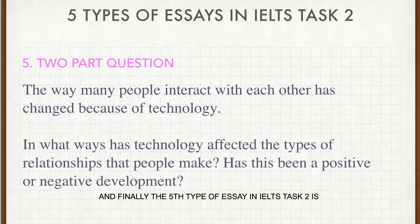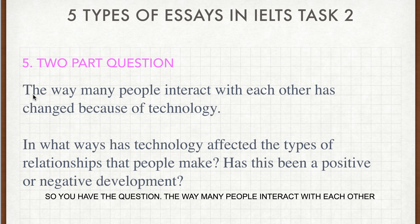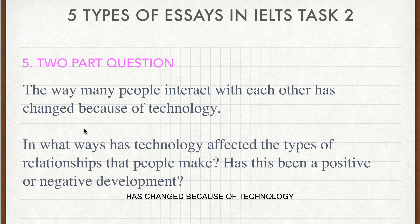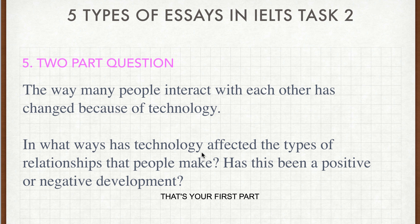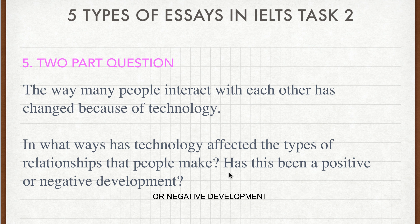Finally, the fifth type of essay in IELTS task two is the two-part question. For example: 'The way many people interact with each other has changed because of technology. In what ways has technology affected the types of relationships that people make?' — that's your first part. And the second part is: 'Has this been a positive or negative development?'